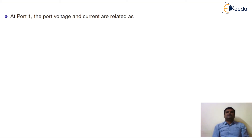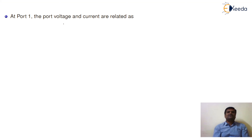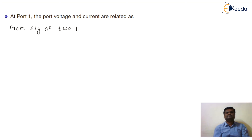Now we will calculate ZIN1 and ZIN2 at port 1 and port 2. First we calculate ZIN1. At port 1, the port voltage and current are related as at port 2. From the figure of the two-port network, we derive the relationships.